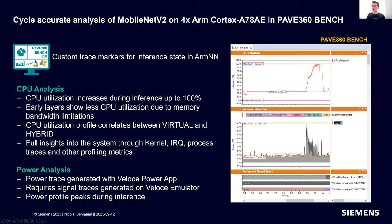Now doing a cycle-accurate analysis of MobileNetV2 on the quad-core ARM Cortex-A78AE in PACE 360 Bench. This uses RTL emulation — the most accurate results short of running on a real semiconductor device. You can see power metrics: during network creation, optimization, and loading, power is around less than 2 milliwatts in idle. As soon as inference begins, CPU utilization increases from approximately 25% to 100%, and power peaks at close to 10 milliwatts.